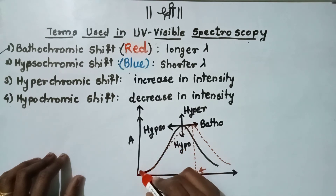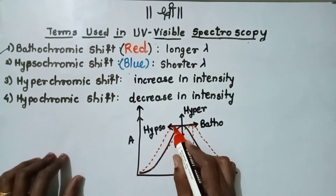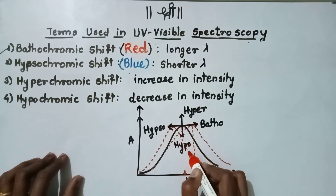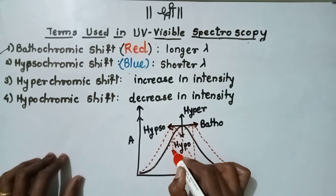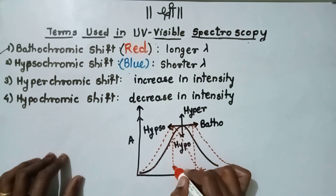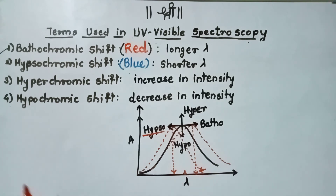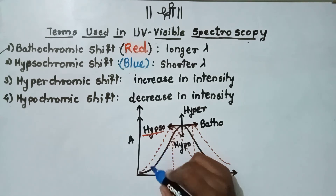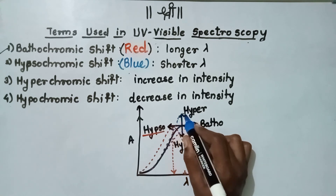When the addition of auxochrome stabilizes a positive charge in the compound, then there is a shift in spectra towards the shorter wavelength, and it is called as the hypochromic shift. When there is an increase in intensity of spectra, the same lambda max value increases in intensity.